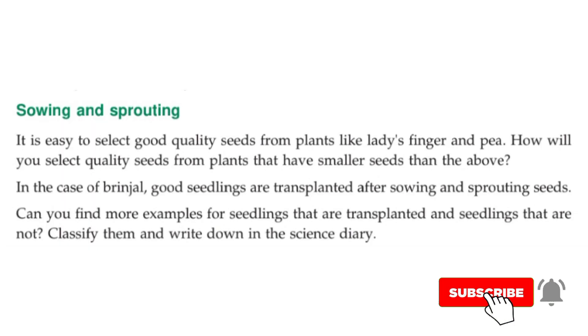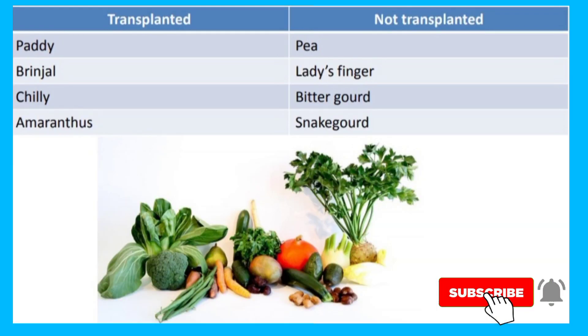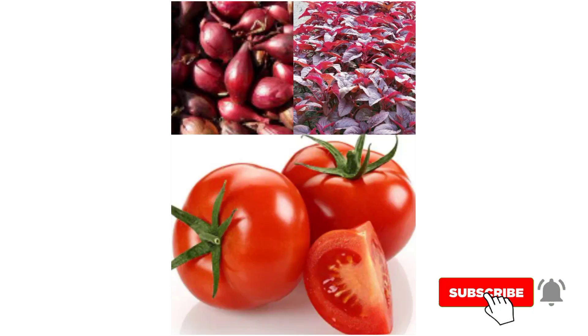Can you find more examples for seedlings that are transplanted and seedlings that are not? Classify them. Seedlings that are transplanted: paddy, brinjal, chili, and amaranthus. Seedlings that are not transplanted: pea, ladies' finger, bitter gourd, and snake gourd. You can add more examples like tomatoes, spinach, and shallots for transplanted seedlings.